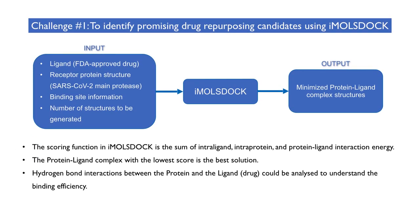The first challenge is to identify promising drug repurposing candidates using IMALS DOG. The inputs for IMALS DOG are: first, a ligand which is an FDA approved drug; second, the receptor protein structure; and third, the binding site information.